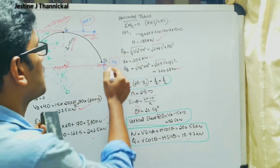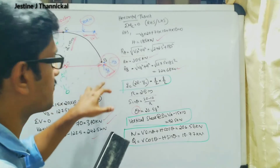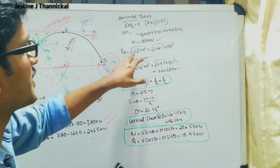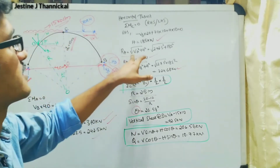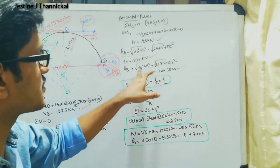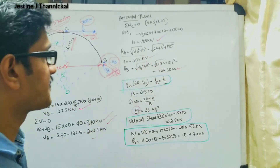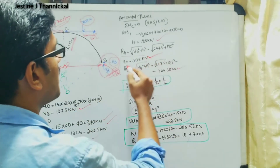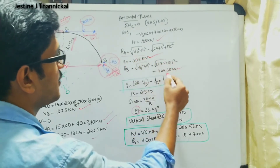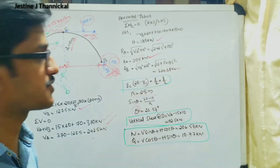Since there is one horizontal force and one vertical force at each support, the resultant reaction is R equals square root of (VA² plus HA²), and similarly RB equals square root of (VB² plus HB²). Substituting the values, RA equals 305 kilo Newton and RB equals 224.68 kilo Newton respectively.